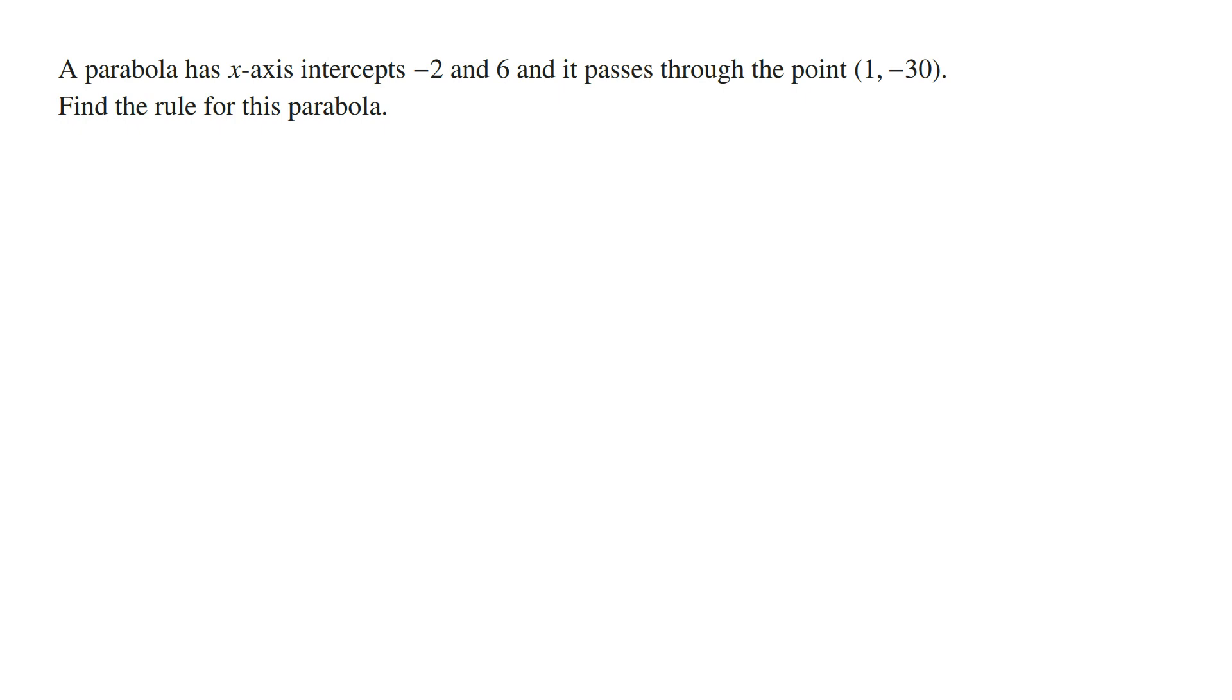Reading the question, we've got a parabola has x-axis intercepts -2 and 6 and it passes through the point (1, -30). Find the rule for this parabola.